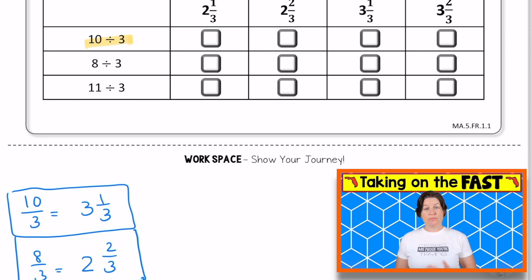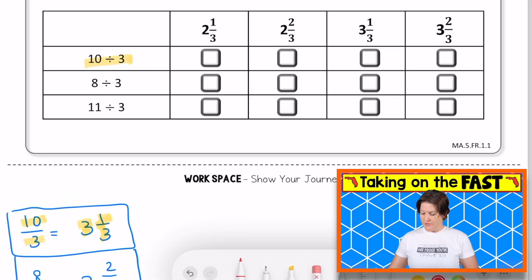And I said, okay, 10 divided by 3 is the same thing as 10 thirds, which can also be written as 3 and 1/3. So I will select 3 and 1/3.